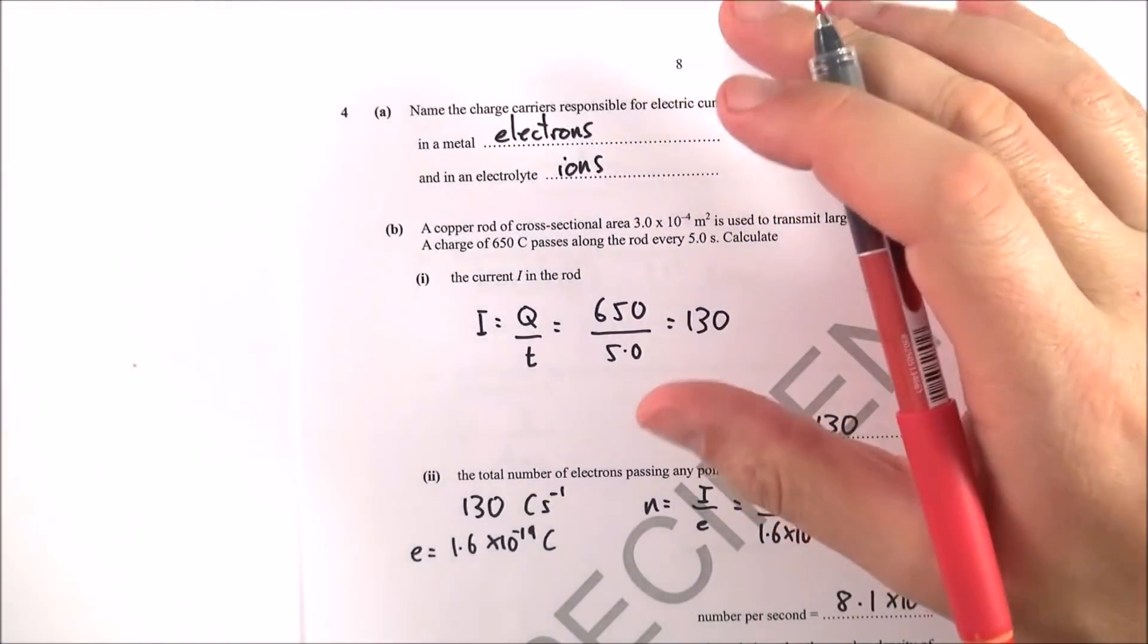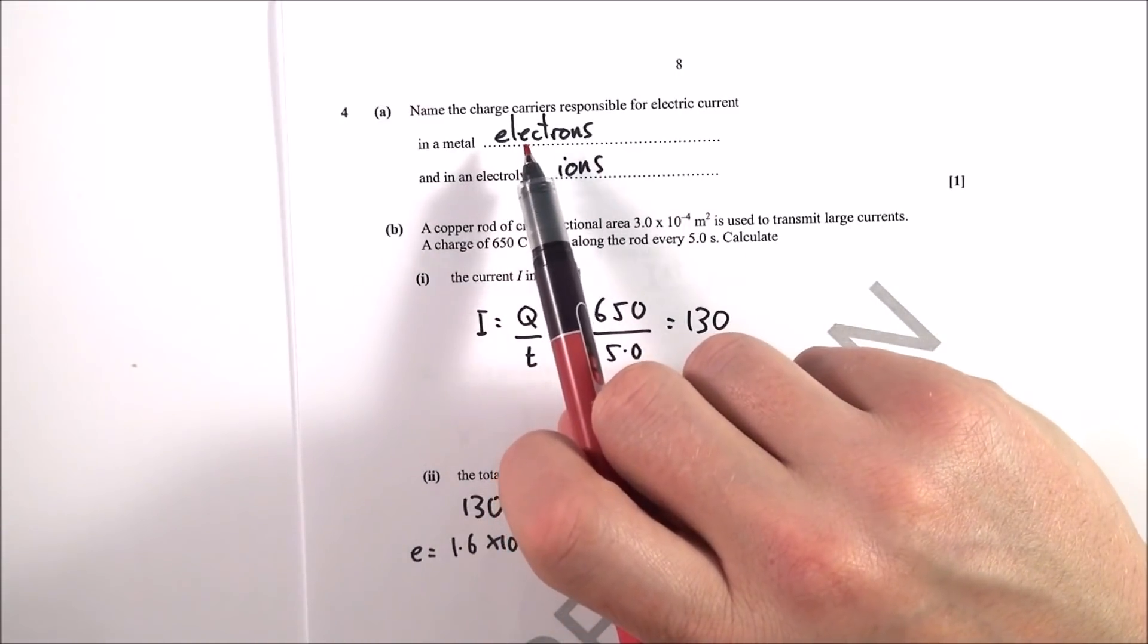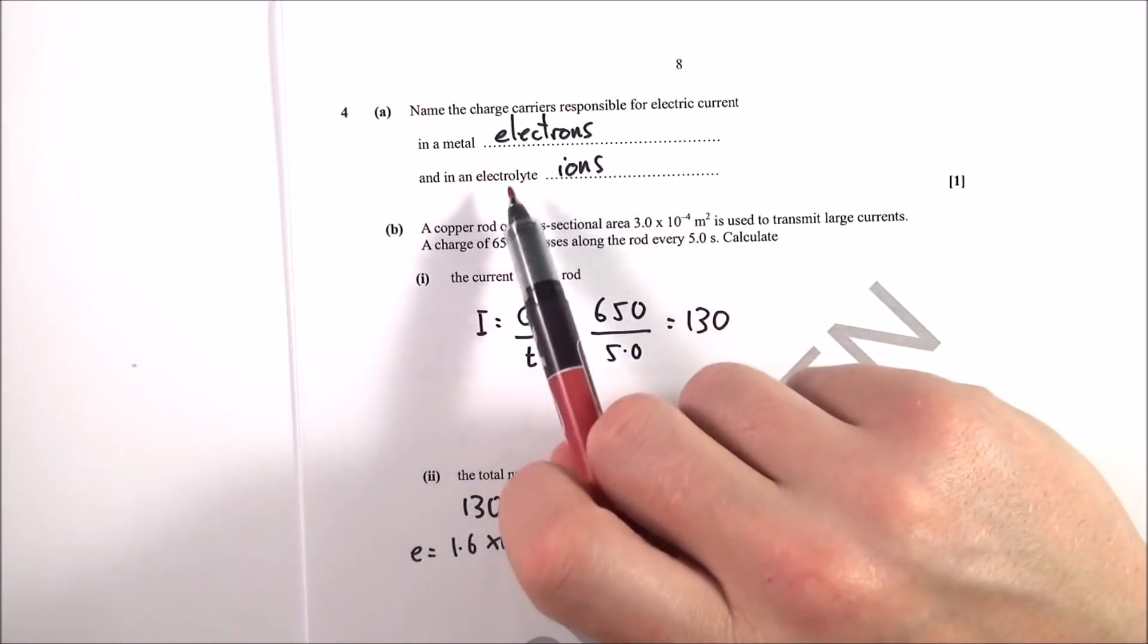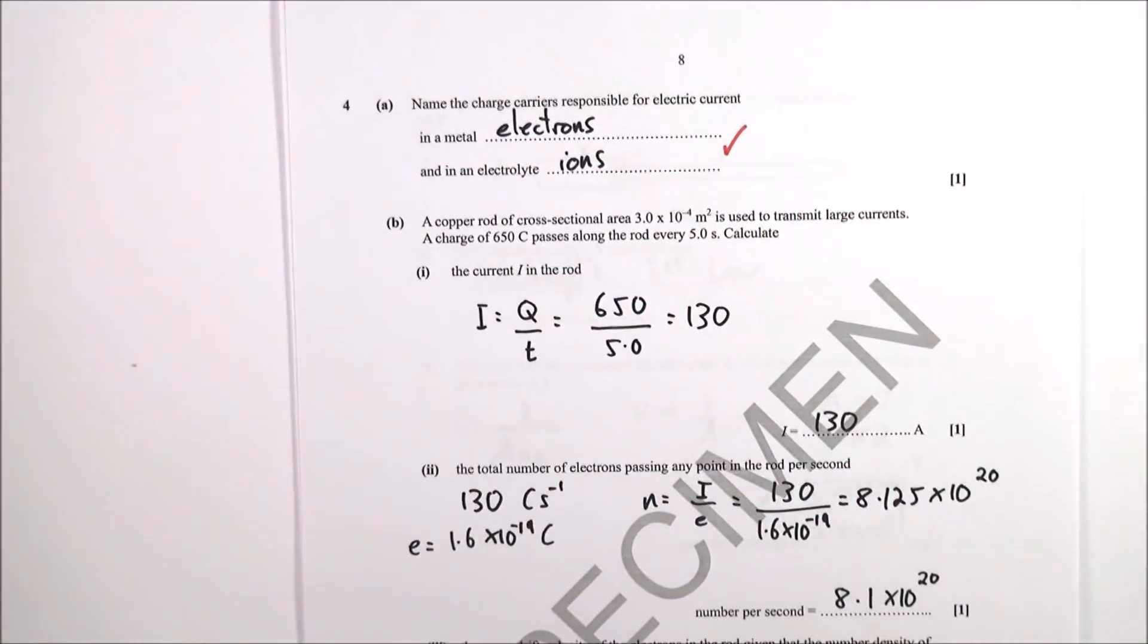Now question four starts out quite nicely with a kind of GCSE question. You should know that electrons transfer charge in a metal and in an electrolyte it is the ions. That's all they need, so that's some very straightforward easy one-mark things there.